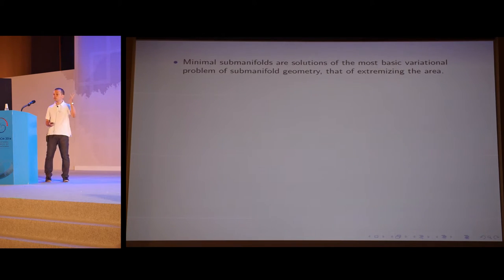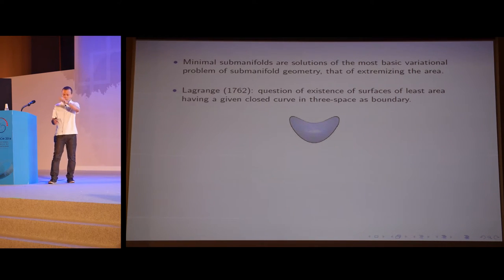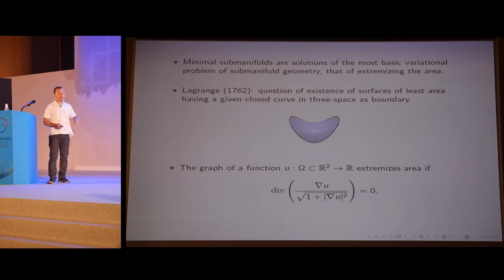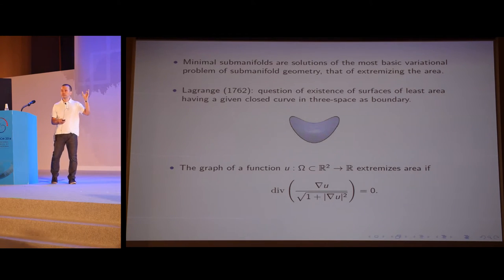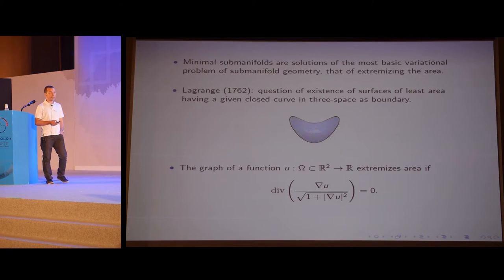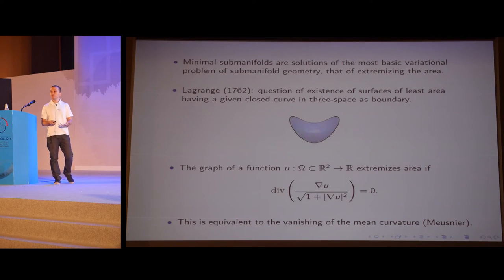Minimal submanifolds are solutions of a very basic variational problem — the problem of extremizing the area. It goes back to Lagrange, who in 1762 asked the question of existence of surfaces of least area with some given contour in three space, the boundary. What Lagrange did was to derive the differential equation a function must satisfy so that its graph is a solution to this problem. It's a quasi-linear elliptic partial differential equation. Meusnier was the one who discovered that this equation is equivalent to a geometric property: the vanishing of the mean curvature. And the differential geometry of surfaces got started.